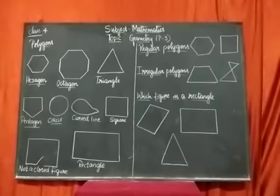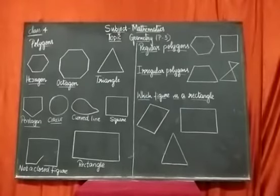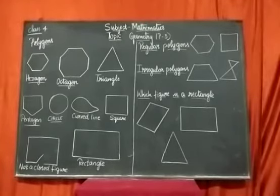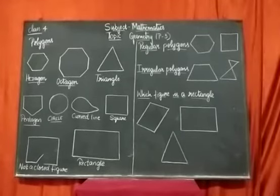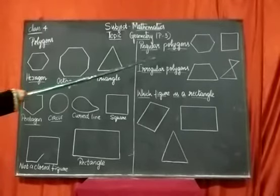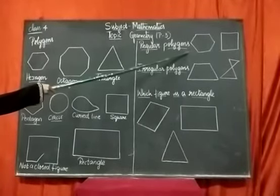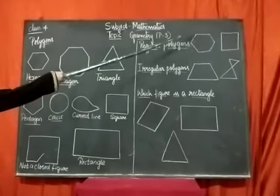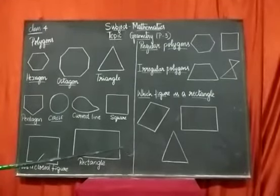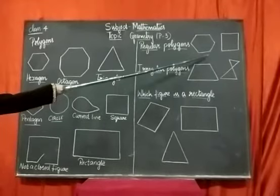We will go to regular polygons and irregular polygons now. What do you mean by regular polygons? A regular polygon is a polygon with all sides equal and all angles equal. For example, a hexagon is a regular polygon — all the sides are equal and all the angles formed are also equal. The square also.